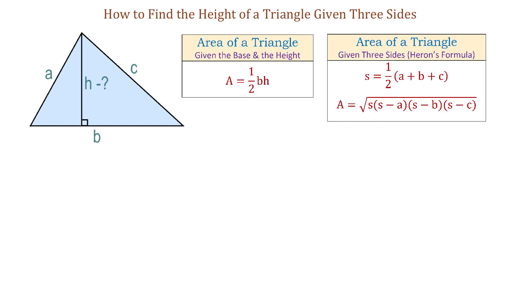To deduce a formula for the height, we need two formulas for the area of a triangle. The first one is the area of a triangle given the base and the height, and this is A equals one-half times base times height.